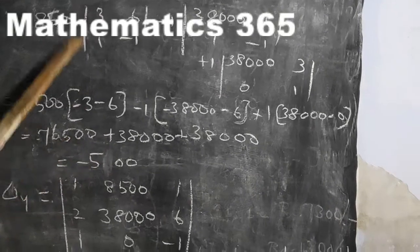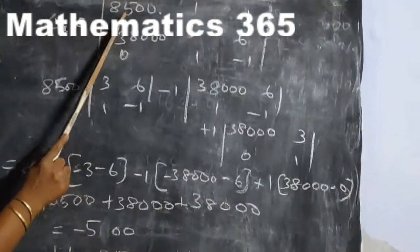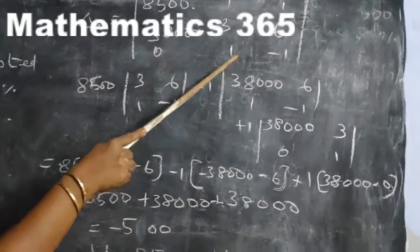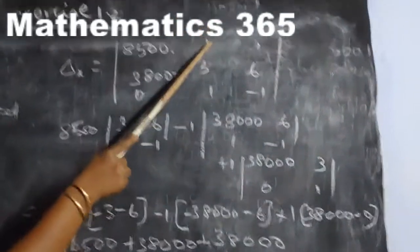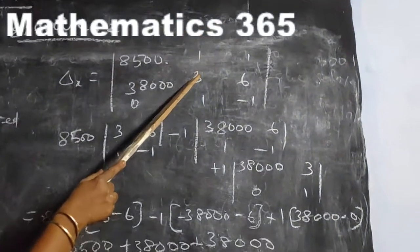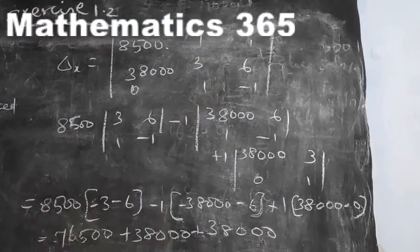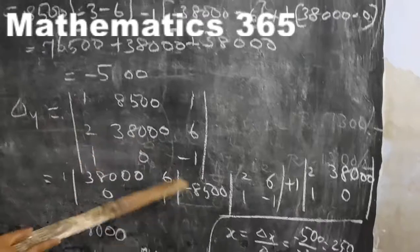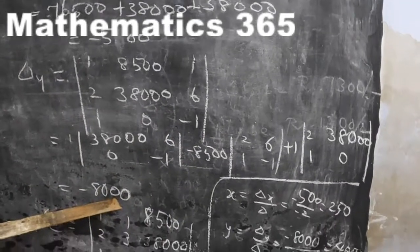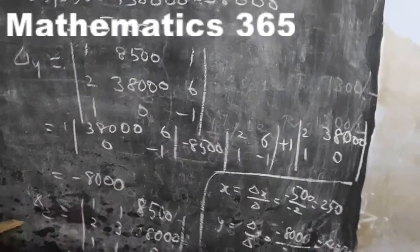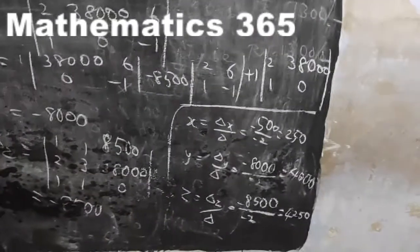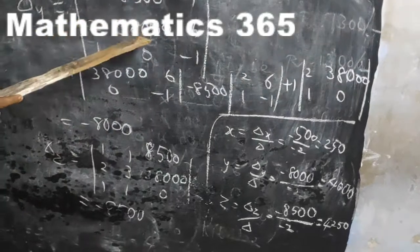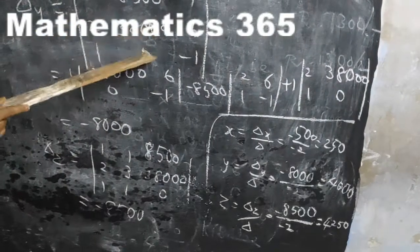Delta Y: replace the y-column with the values 8500 and 3800 (38000). Expanding along R1 gives Delta Y equals minus 8000.